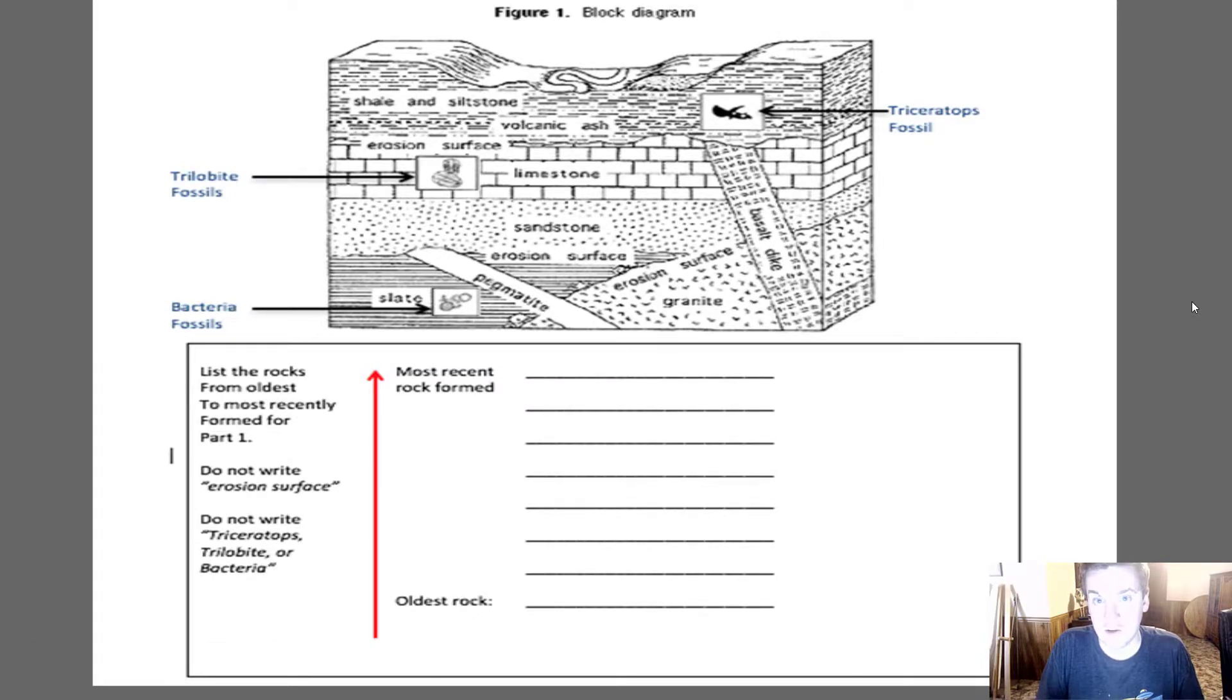You should have an answer for oldest to youngest. Look at the rock outcrop and use our principles that we learned about of relative aging. So, when we talk about Stenno's laws, original horizontality, lateral continuity, superposition, fossil succession, inclusions, you should be able to figure out a rough estimate of the timings. Pause the video, fill this out from oldest to youngest, and then come back and I'm going to go over the answers.